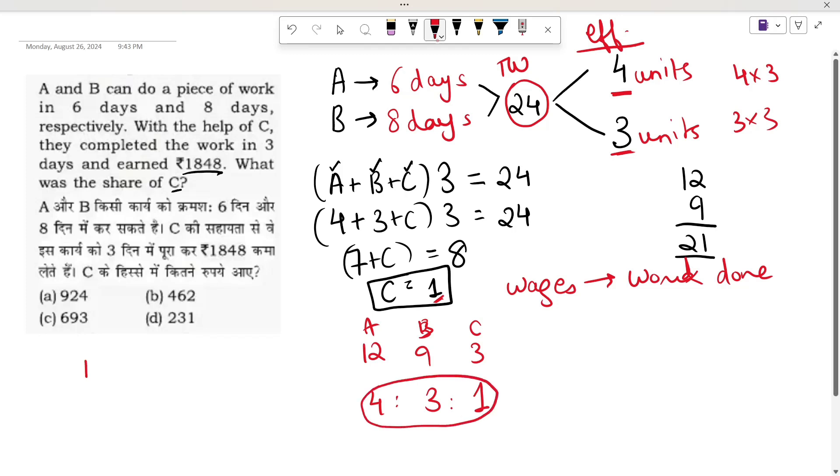So if I calculate ₹1848 times C's share, 1 upon 4 plus 3 plus 1, that's 1 upon 8. ₹1848 divided by 8 is ₹231. Then 8 times 1 is 8, 8 times 3 is 24, 8 times 1 is 8. ₹231 is the answer.